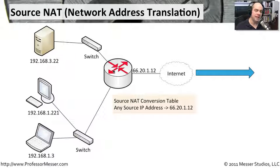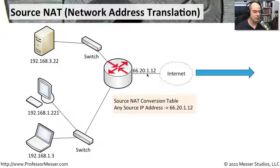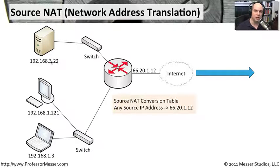Another nice part about this is that we're not connecting our users directly to the internet. There's no way for someone on the internet to access 66.20.1.12 directly and somehow end up at this user. The only way you would be able to do that is if that user asked Google first and Google replied. So there is a security component to providing that source NAT.